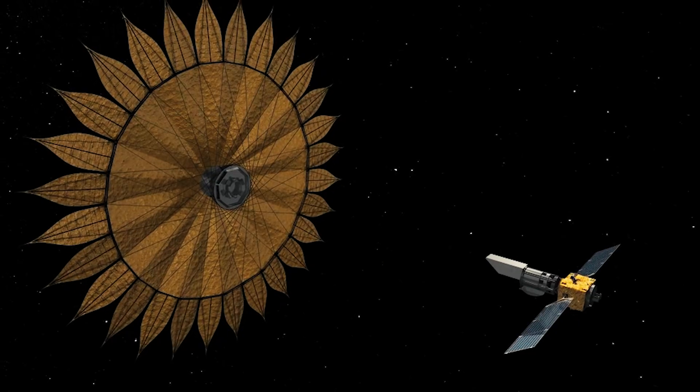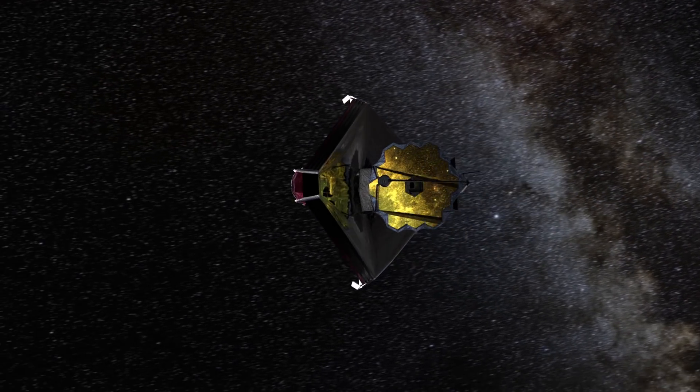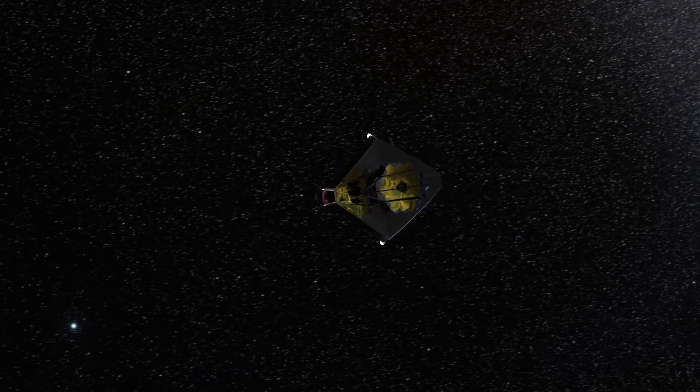With the help of starshades and giant space telescopes, one day we'll get images of such a distant world. They may be only a few pixels across, but researchers have simulated them using degraded images of Earth, and believe they will be able to detect oceans and continents, rotation rate, and seasons. From these they can get a better idea of a planet's climate and suitability for life.